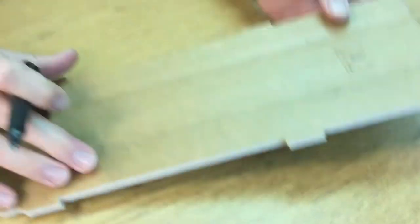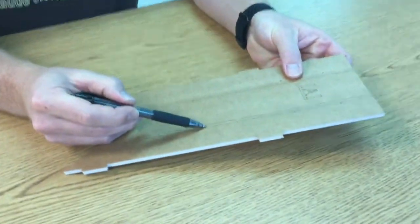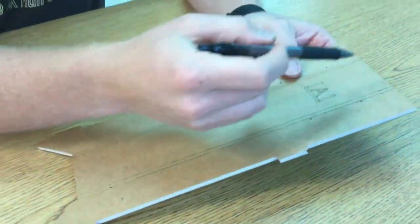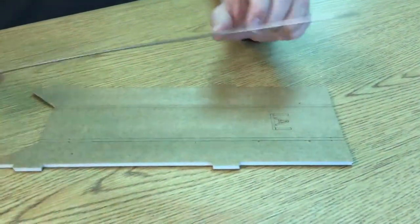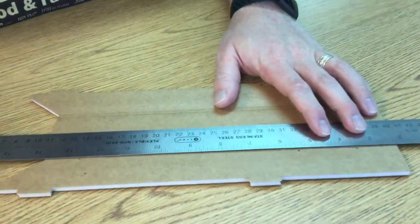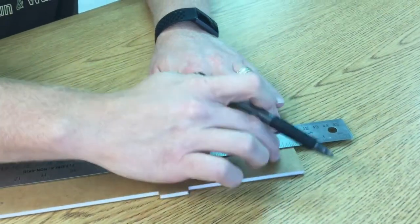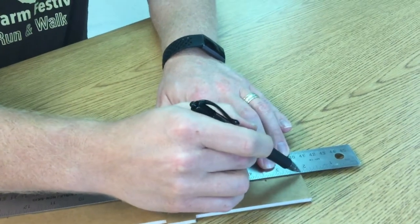And this is the chunk of foam that you are going to remove. At this point you're going to take a sharp knife and a straight edge, and you are going to cut through the top layer of paper and a little bit of the foam.